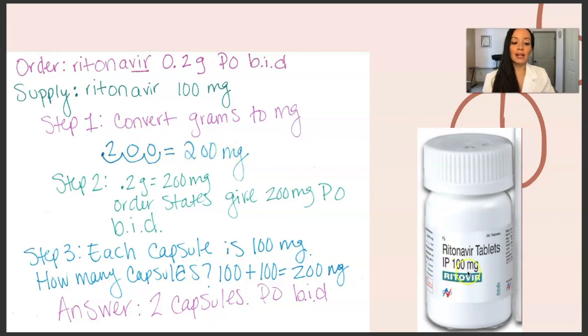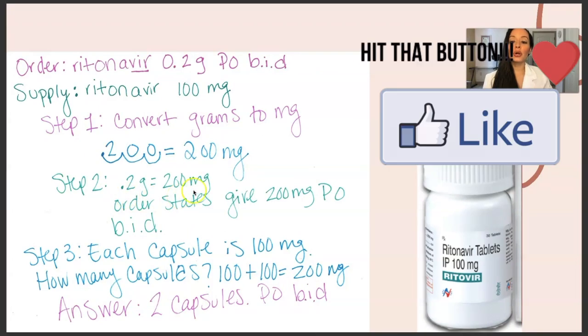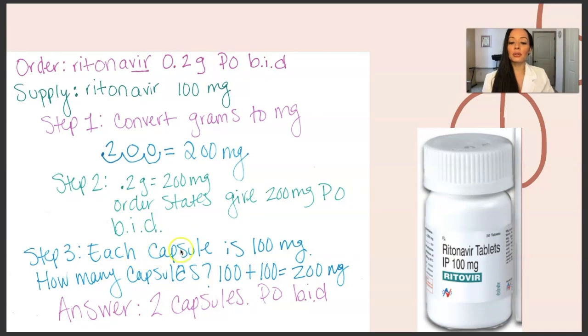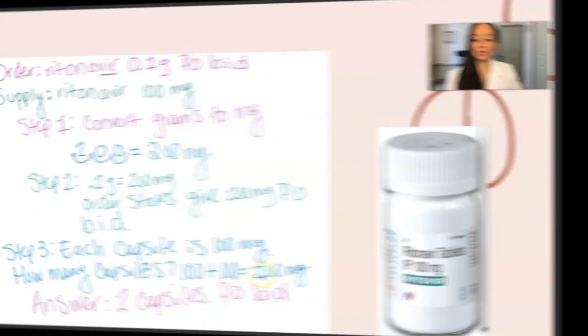Well, this is 100 milligrams. Each tab is 100. So how many tabs do I have to give to equal 200 milligrams? Two tabs, right? The new order is 200 milligrams. So order states give 200 milligrams orally two times a day. Each capsule, I wrote capsule, but it should be tablet. So each tablet is 100 milligrams. How many tablets? 100 plus 100 is 200. The answer is two tablets orally two times a day.